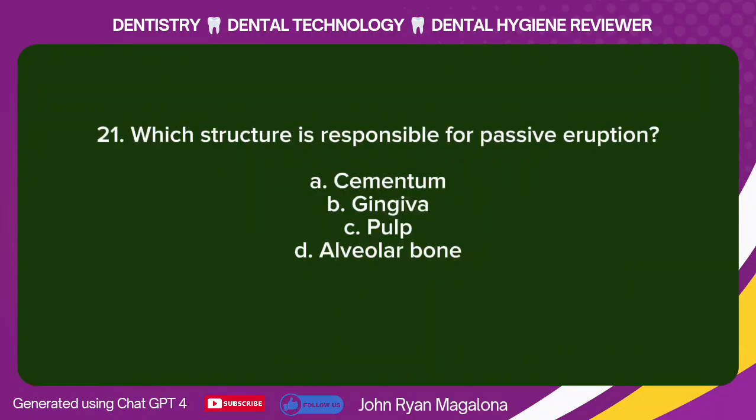Question 21: Which structure is responsible for passive eruption? A. Cementum. B. Gingiva. C. Pulp. D. Alveolar bone. Answer: B. Gingiva.